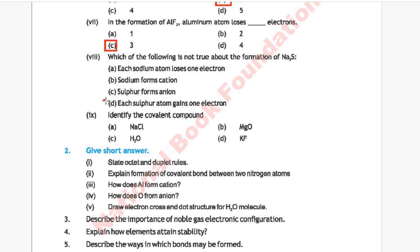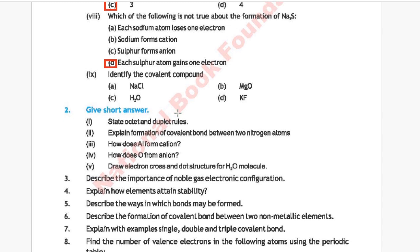Question 9: Identify the covalent compound. Option A: NaCl, Option B: MgO (magnesium oxide), Option C: H₂O, Option D: KF (potassium fluoride). The correct answer is Option C, H₂O.